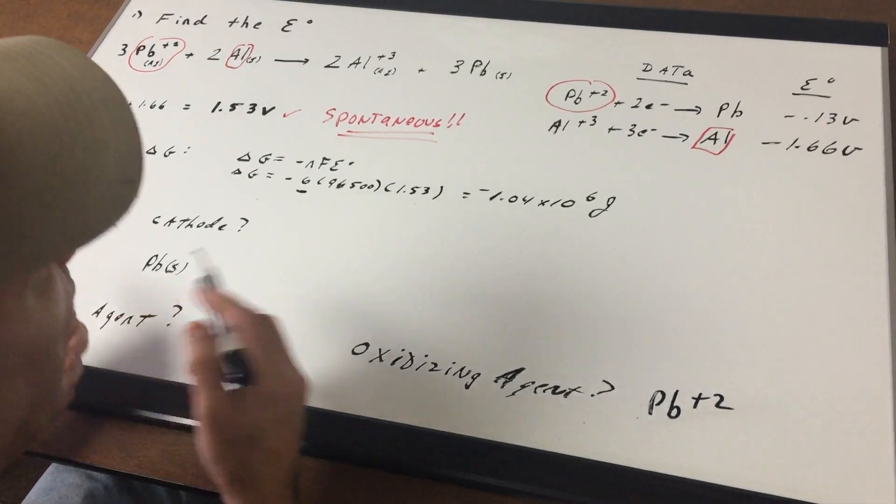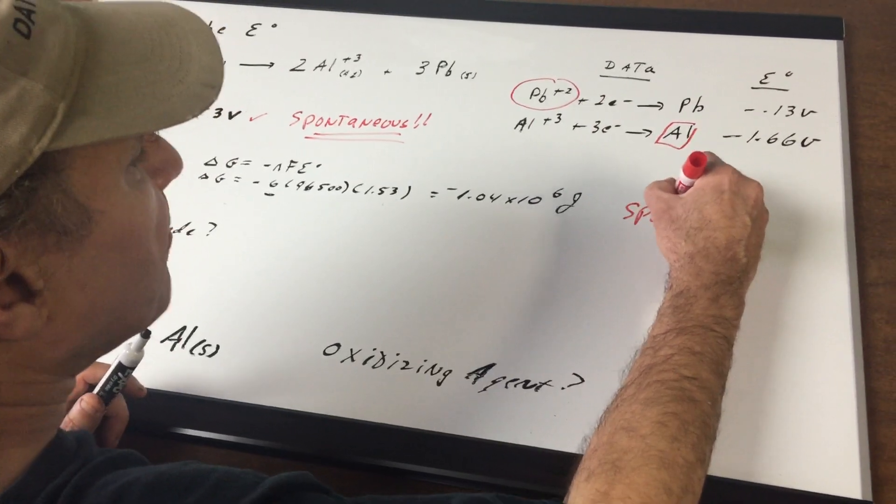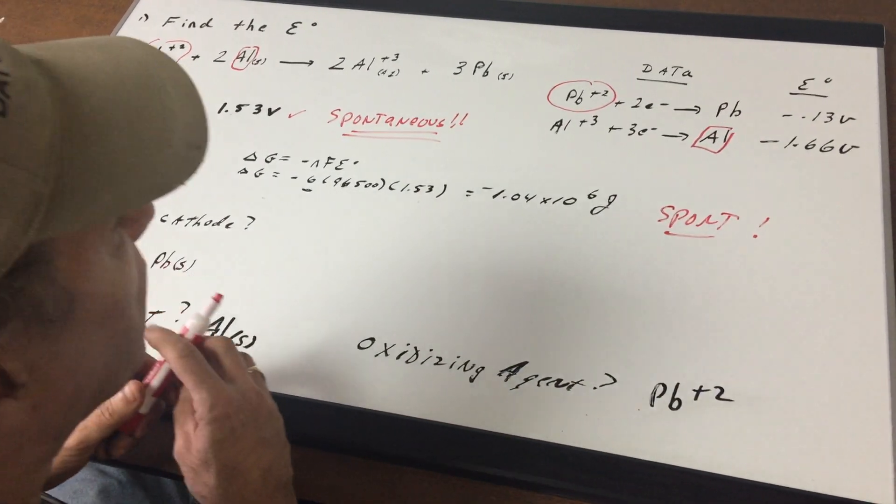Multiplying together we get a negative delta G. Again, negative delta G of course means the reaction is spontaneous and we get negative 1.04 times 10^6 joules.